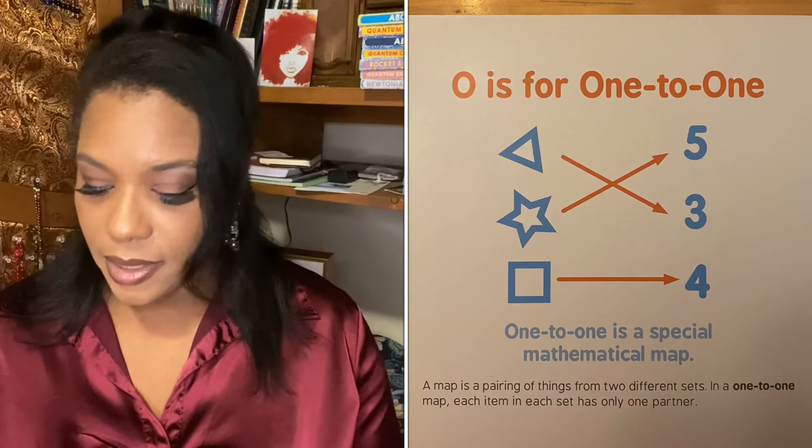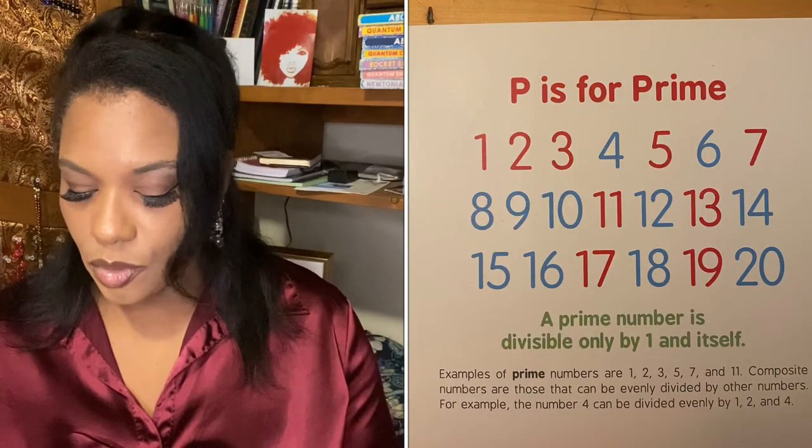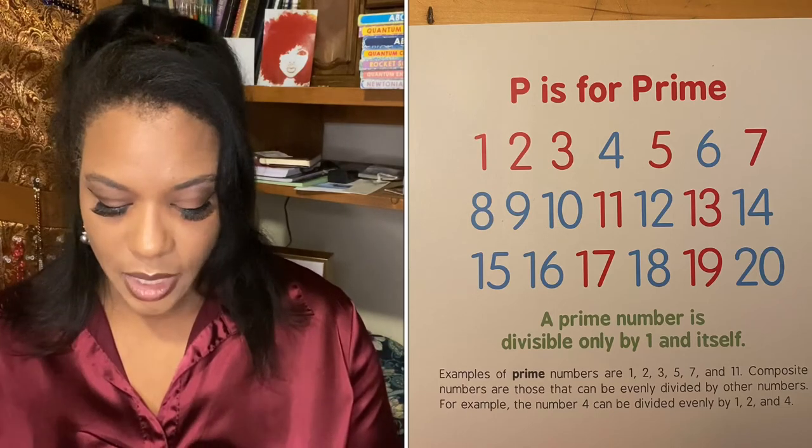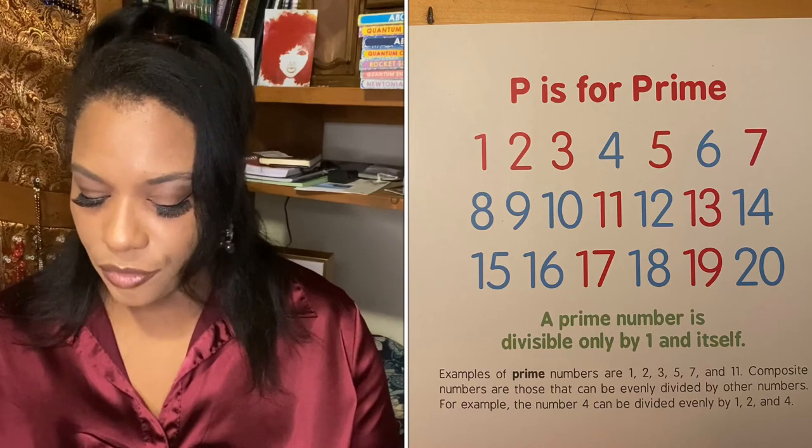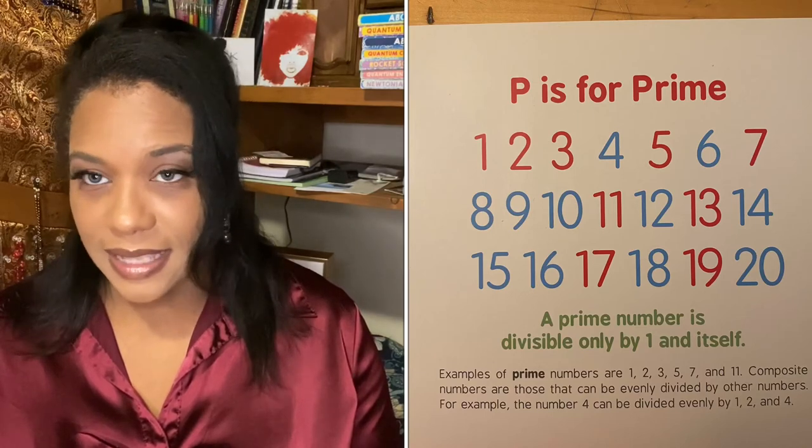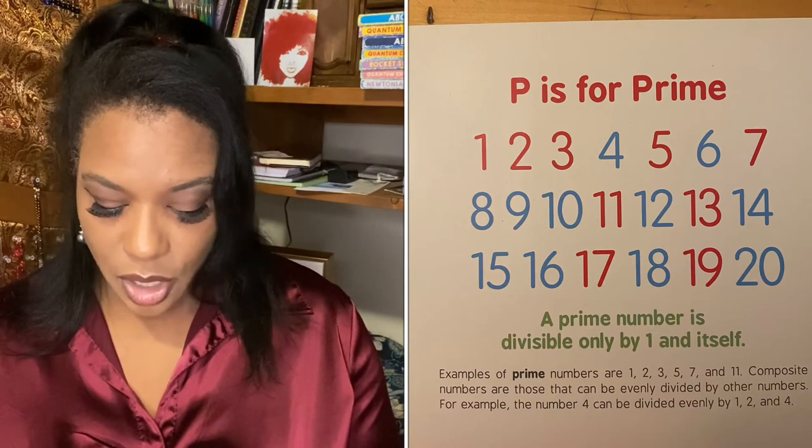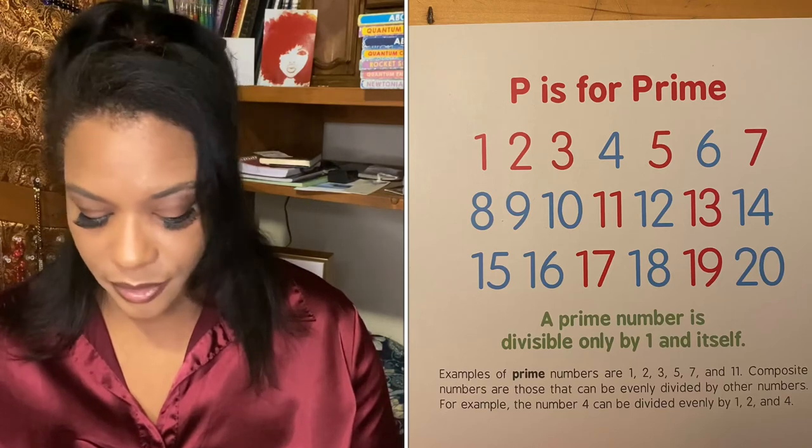P is for prime. A prime number is divisible only by one and itself. Examples of prime numbers are one, two, three, five, seven, and eleven. Composite numbers are those that can be evenly divided by other numbers.